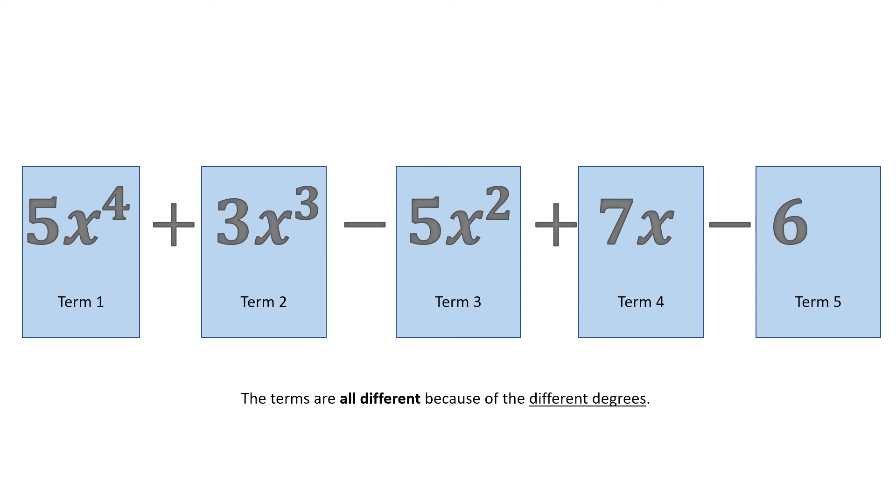5x to the power of 4 plus 3x cubed minus 5x squared plus 7x minus 6. There is no like term. Because our degree here for the first term is to the power of 4, for the second is to the power of 3, for the third to the power of 2, and for the fourth to the power of 1. And then we have a constant which is not related because there is no variable. We cannot simplify this equation like we would normally.